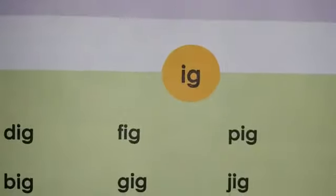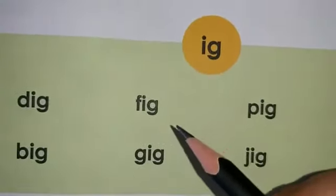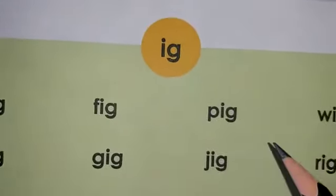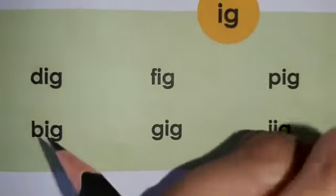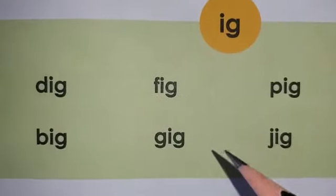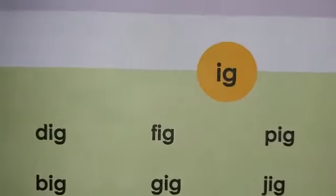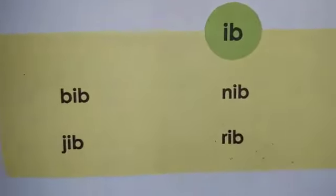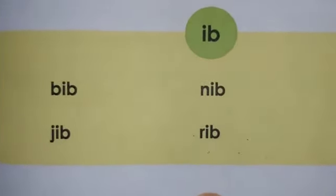Now the next cluster — IG cluster. Let's study the IG sound words. D-I-G dig, F-I-G fig, P-I-G pig, W-I-G wig, B-I-G big, G-I-G gig, J-I-G jig. So these are all the IG, ID, and IB cluster words given on page number three. I hope you have revised them along with me.